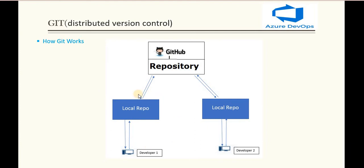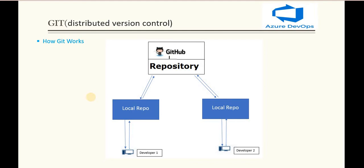Everything happens through this local repository. Suppose developer one is working on one file and makes some changes to their local repository, and developer two is also working on the same file and making changes and pushing code into their local repository. At final, these local repositories are essentially different branches for both developers. Instead of direct code changes, these branches are merged into the main repository, and the main repository takes care of merging those changes.